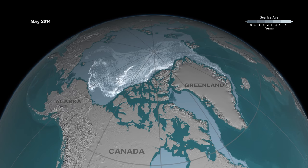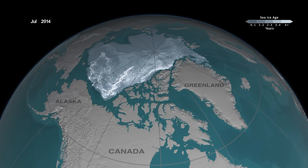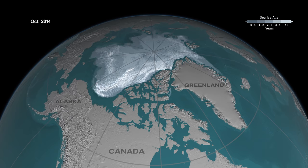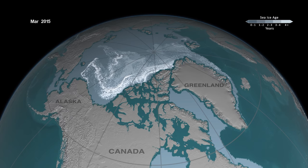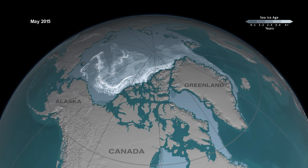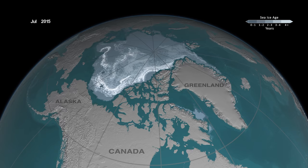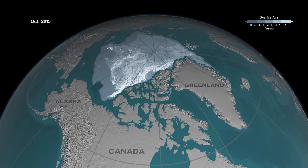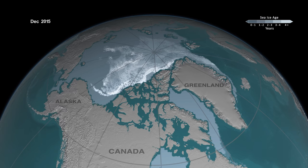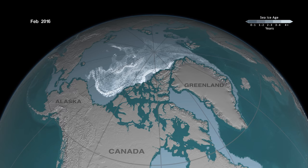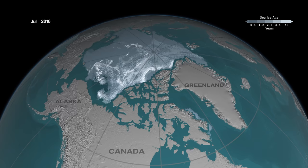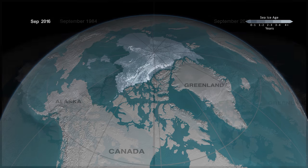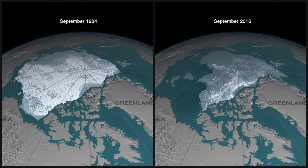As we get towards the more recent years, much of that oldest ice — the ice that's older than five years old, shown in bright white — has almost virtually disappeared from the Arctic Ocean. The Arctic is now dominated by younger and thinner ice.